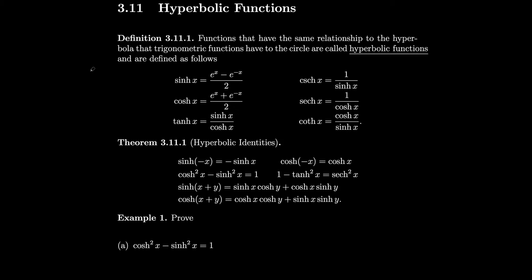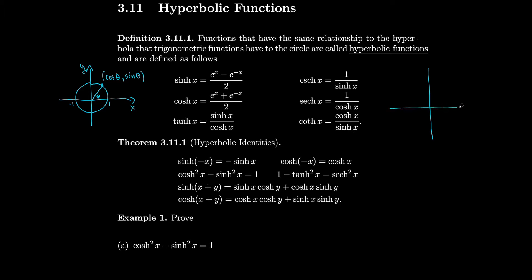Remember that for our unit circle, we would have the x value as cosine of theta and the y value as sine of theta, where theta was the angle formed. This was 1, this was minus 1. For our hyperbolic functions, we're going to look at our unit hyperbola. So here's x, here's y, and let's make some asymptotes.